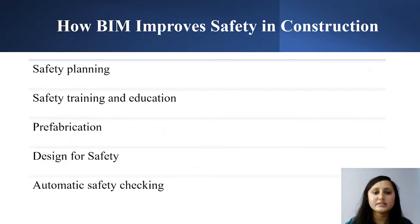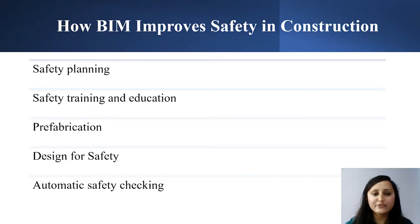Now, how can BIM improve safety in construction? For this, I have divided it into five categories: namely, safety planning, safety training and education, prefabrication, design for safety, and automatic safety checking. In the further slides, we will be discussing them one by one.